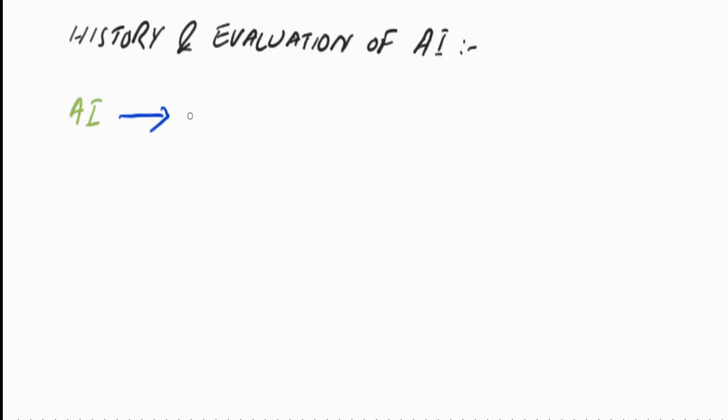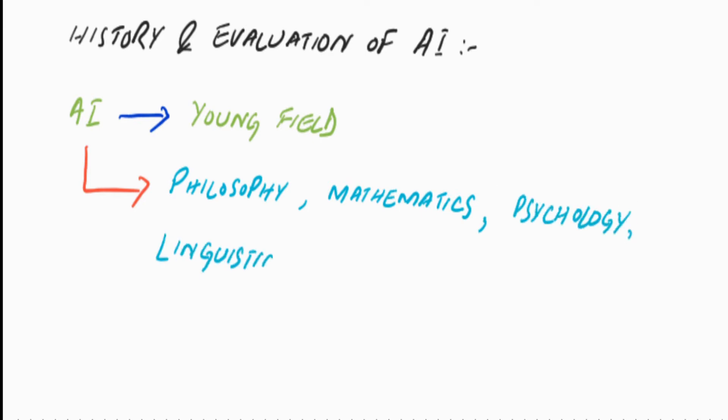Artificial intelligence is a young field. It has inherited its ideas, concepts and techniques from many disciplines, like philosophy, mathematics, psychology, linguistics, biology, and many more.